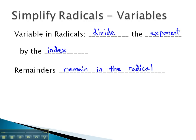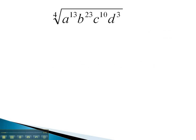Let's take a look at some examples where we do just this with variables. In this problem, we're taking a fourth root. This means we will divide each exponent by 4.